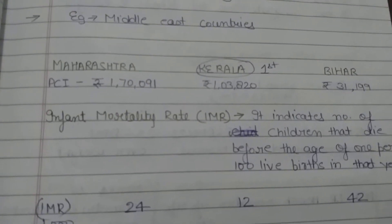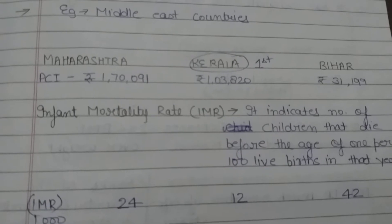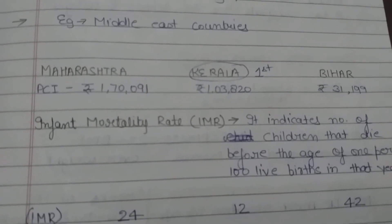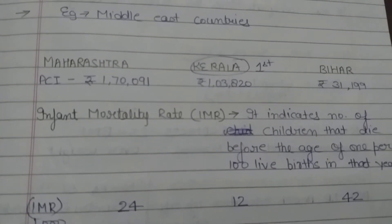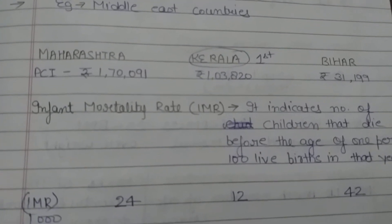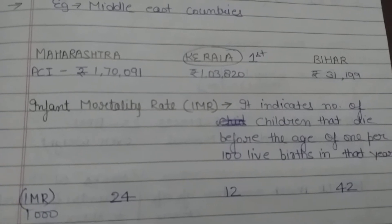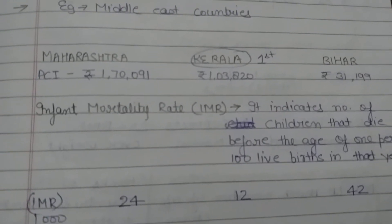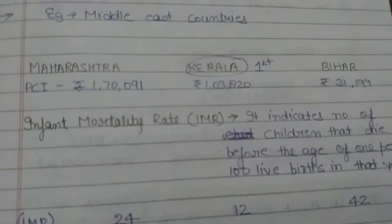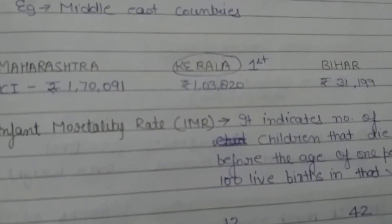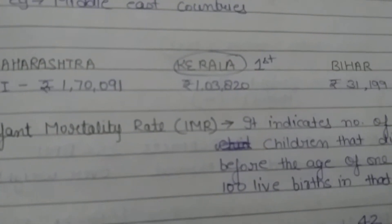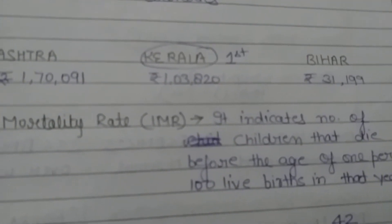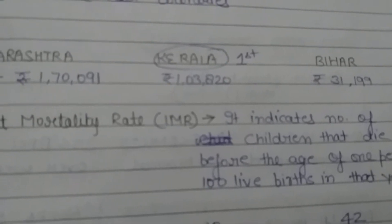Per capita income — remember the term per capita income, that is average income. Per capita income of Maharashtra is 1,70,091 rupees. Kerala is 1,03,820 rupees. And Bihar is 31,199 rupees.